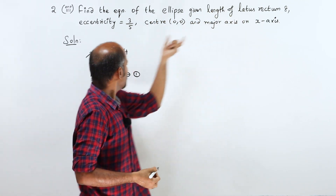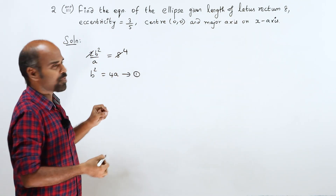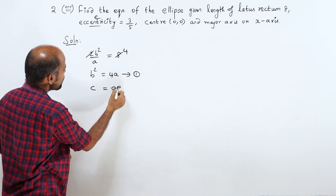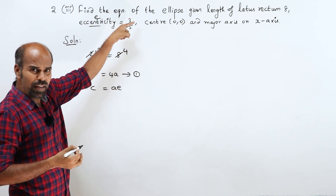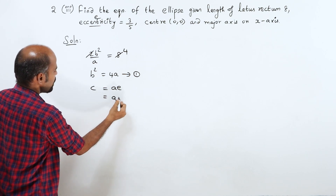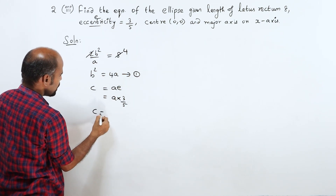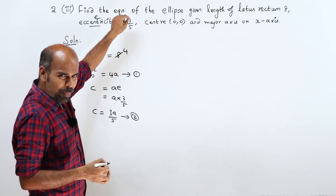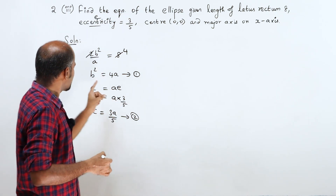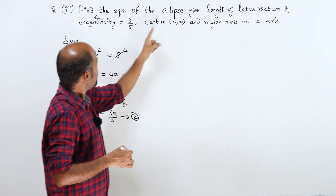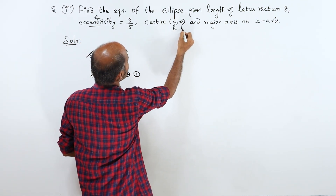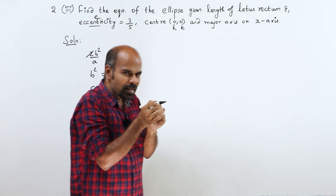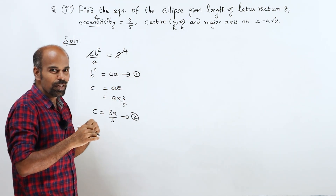Length of latus rectum. C is equal to 3A by 5. Equation number 2: E is equal to A into 3A by 5. A is equal to C. If we speak to E, then we speak to C. So A is equal to C.